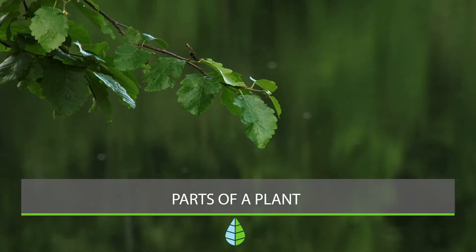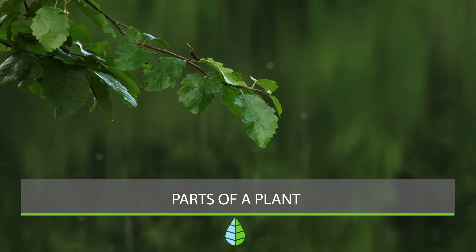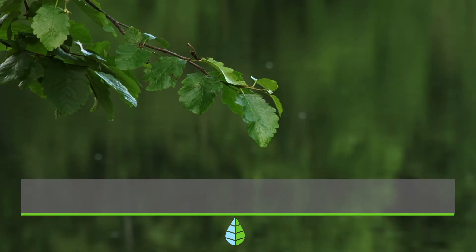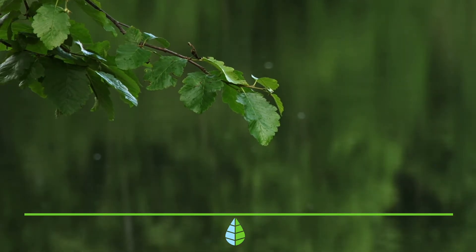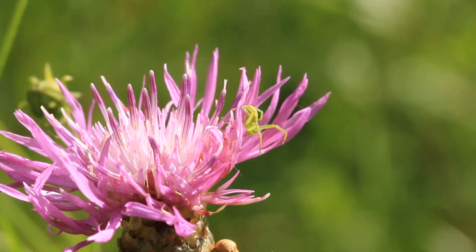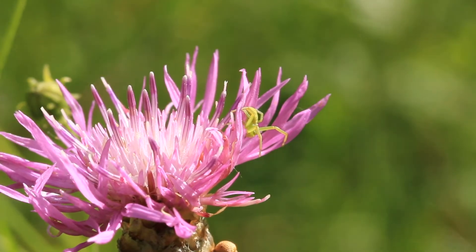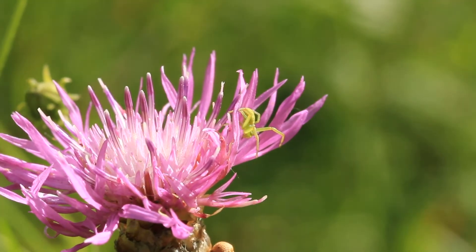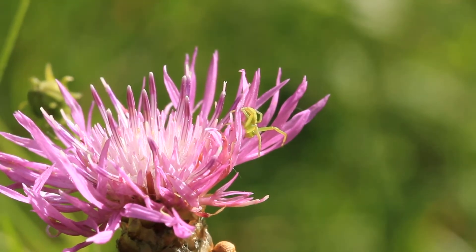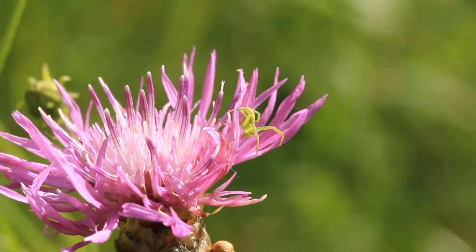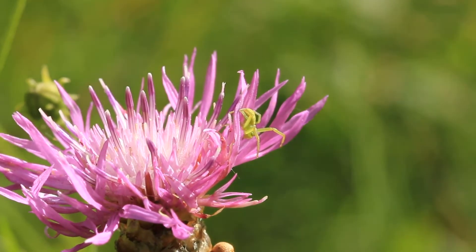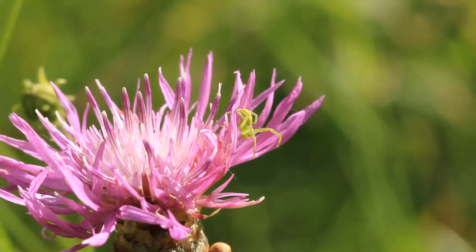Plants have roots, stem, fruits, flowers, leaves, and seeds, and each part of them has their own function. In today's The Daily Eco video, we're going to explain the different parts of a plant and their functions. Let's dive right in.